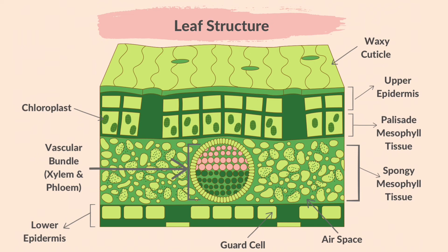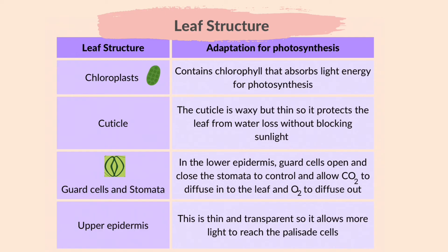Let's learn how different leaf structures are adapted for photosynthesis. They have chloroplasts that contain chlorophyll that absorb light energy for photosynthesis. The leaf's cuticle is waxy but thin, so it protects the leaf from water loss without blocking sunlight. In the lower epidermis, guard cells open and close the stomata to control and allow carbon dioxide to diffuse into the leaf and oxygen to diffuse out.